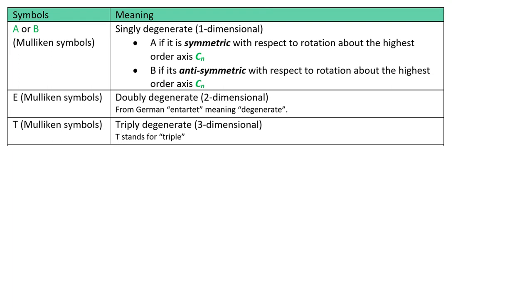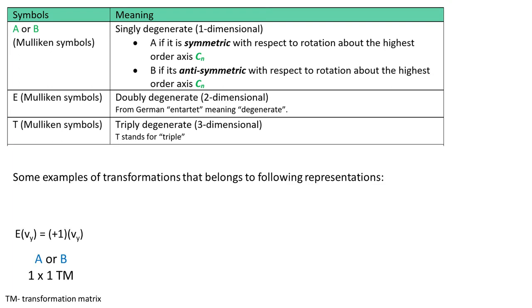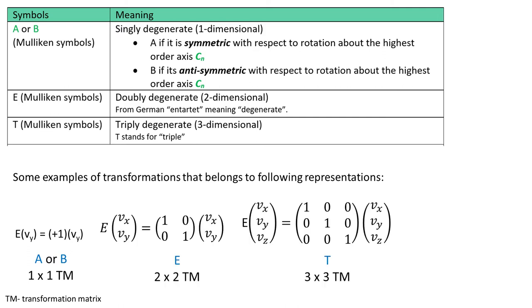So let's start with letters A, B, E and T. I already told you that A and B representations have one by one transformation matrices. E has two by two and T three by three transformation matrices.